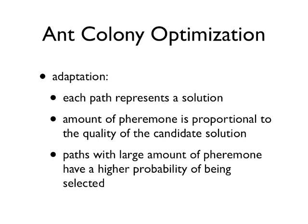ACO algorithms are based on the following ideas. Each path followed by an ant is associated with a candidate solution for a given problem. When an ant follows a path, the amount of pheromone deposited on that path is proportional to the quality of the corresponding candidate solution for the target problem. When an ant has to choose between two or more paths, the path with a large amount of pheromone has a greater probability of being chosen by the ant.